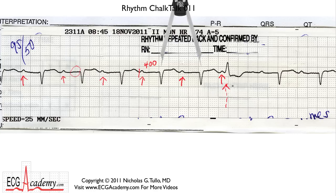So where did this QRS complex come from? Well, it has to be a premature ventricular contraction, or PVC — some people like to say ventricular premature contraction, or VPC. First of all, the QRS complex looks different than the underlying QRS complexes, so it certainly did not take the normal electrical pathways down the bundle branches. The other thing is that the PR interval here, from the beginning of this P wave to the beginning of the QRS complex, is way too short. This P wave couldn't possibly have conducted.